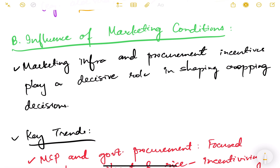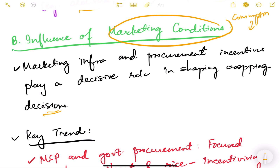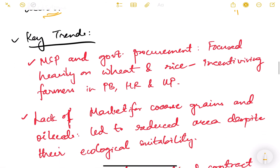Now let us look at the influence of marketing conditions. Marketing infrastructure and procurement incentives play a decisive role in shaping cropping decisions. Consumption is basically a demand-side factor, whereas marketing is a supply-side factor for cropping — farmers make decisions about which crop to grow depending on the marketing conditions and how they can sell their product.